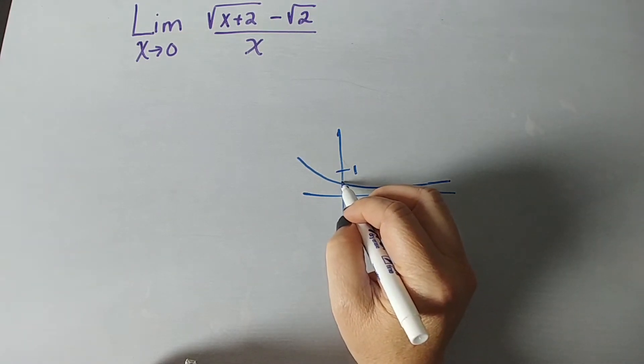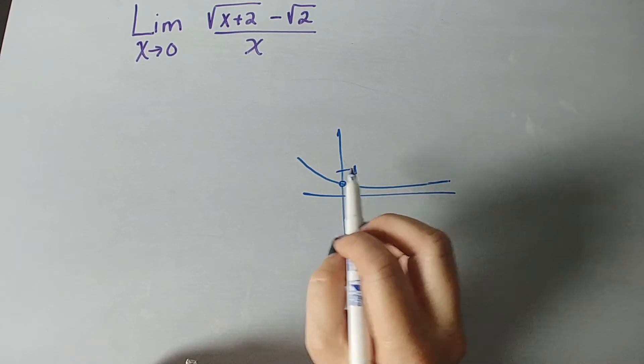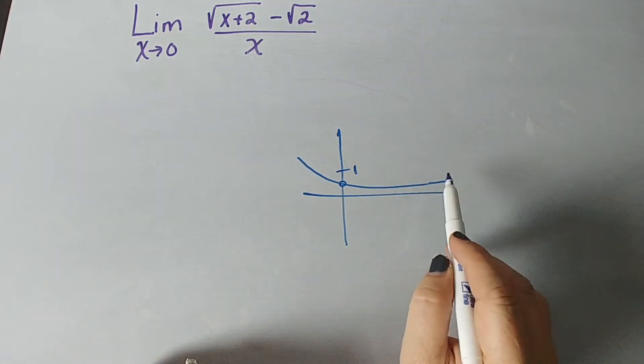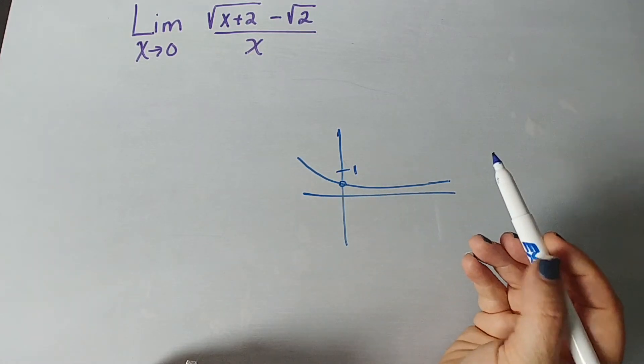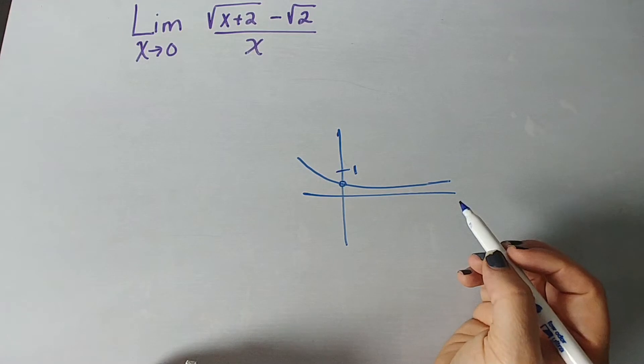But something very specific happens at 1. There's a hole in the graph right here where it's undefined. So, we know that this is continuous. It just doesn't have a value here. So, we want to estimate the limit using a table. And the reason they're asking you to use a table is to get an idea of a limit.